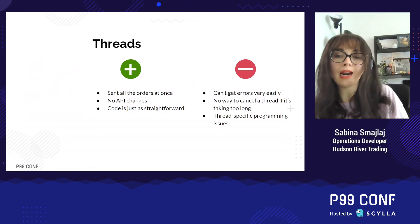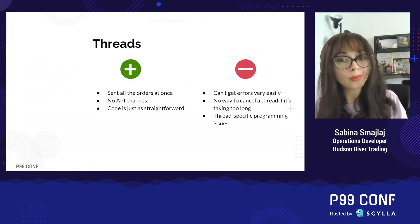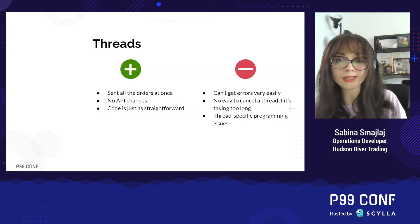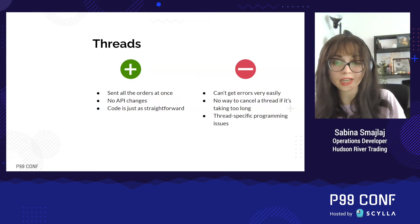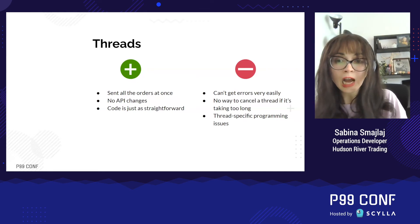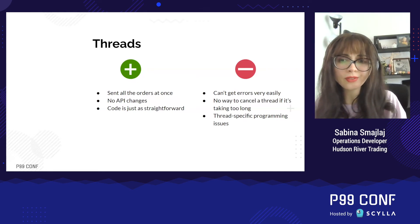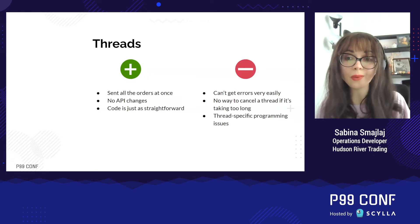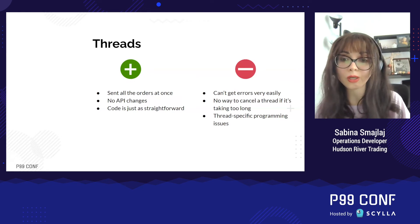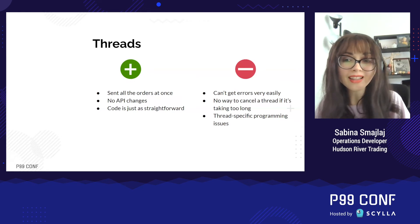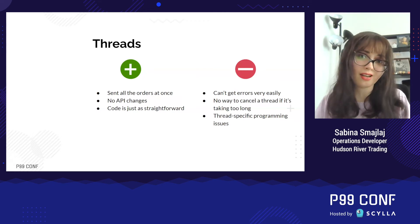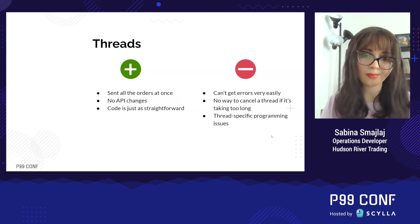So let's sum up our evaluation of threads. On the plus side, we got all of our orders sent at once, and the API didn't have to change. However, we really don't have a way to handle errors, and we don't have a way of canceling orders that take too long. Python doesn't really have a way to force another thread to stop.